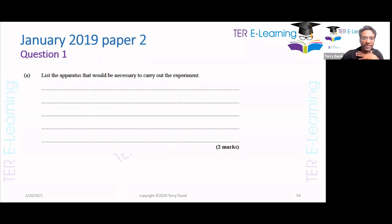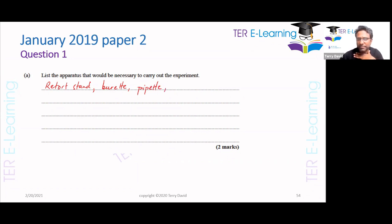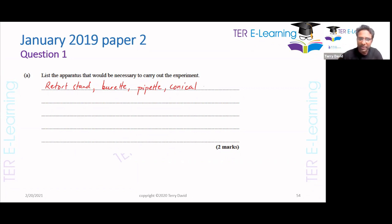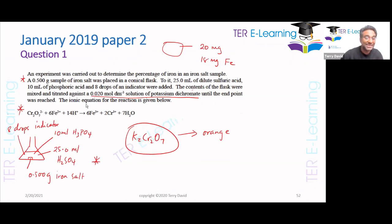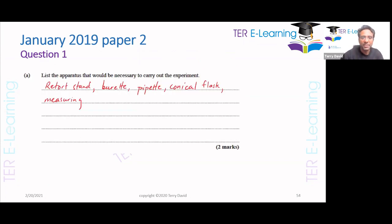Let's write down all the things that we need: a retort stand, a burette, a pipette, a conical flask — remember, when you're doing the titration, you are mixing your mixture as you add things from the burette, so you need a conical flask. You might need a measuring cylinder because in the question you added 25 mL of sulfuric acid and 10 mL of H₃PO₄ — you need a measuring cylinder for that.